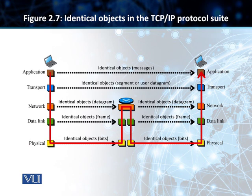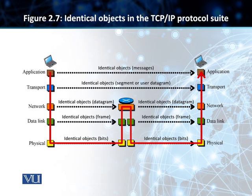Physical layers exchange data in the form of bits. The data link layer data interpreted by the opposite side data link layer is called a frame. The network layer object is called a datagram, also called a packet. On the transport layer, we have a segment or user datagram, and at the application layer, we have a message.